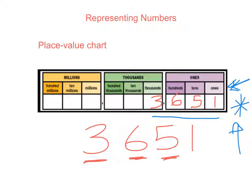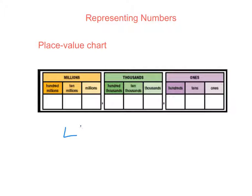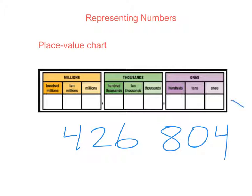Let's do another example together. Let's do a number like 426,804. We want to make sure that we are starting on the right-hand side in our ones.